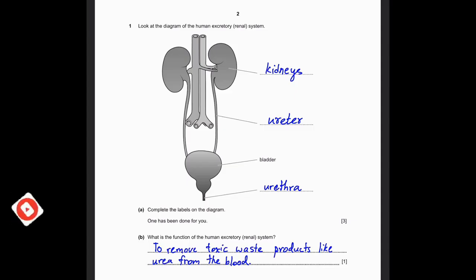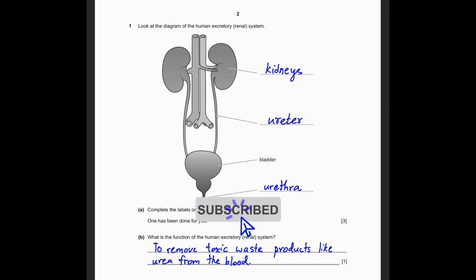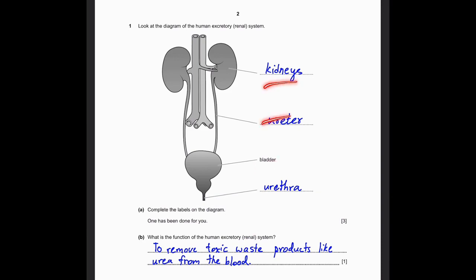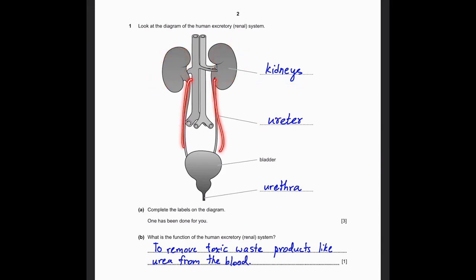Question 1. Look at the diagram of the human excretory or renal system. Complete the labels on the diagram when it's been done for you. The bladder has already been labeled, so we need to label the other three. This one over here is the kidneys. These two pipes are the ureters, and this over here is the urethra.